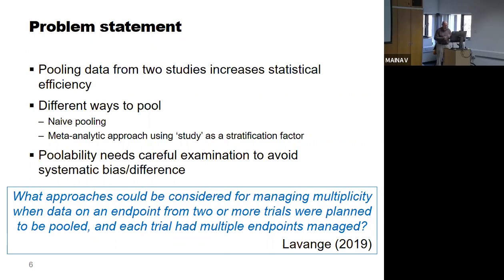How do you fit the pooled analysis under your family-wise error rate control testing scheme? The concept of study-level family-wise error rate control does not apply to the pooled analysis, yet you still want to control your type one error rate and minimize wrong decisions. This is the basic question — how to go beyond the standard per-study family-wise error rate control.